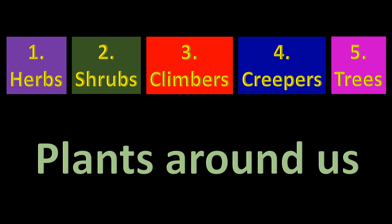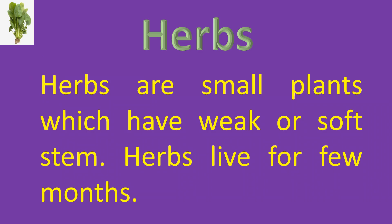There are five types of plants: herbs, shrubs, climbers, creepers, and trees. Herbs are small plants which have a weak stem.